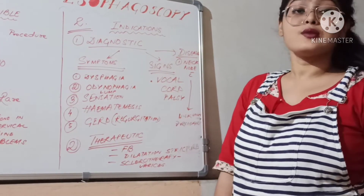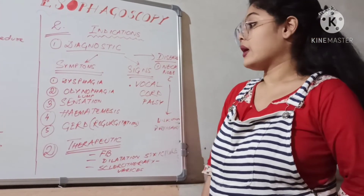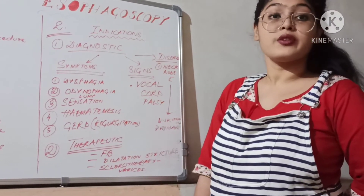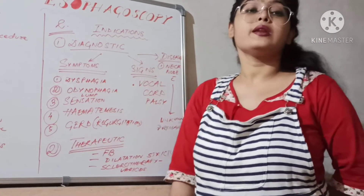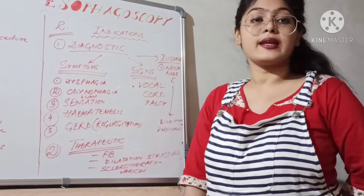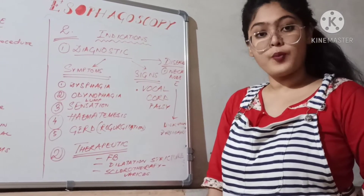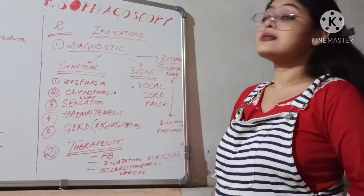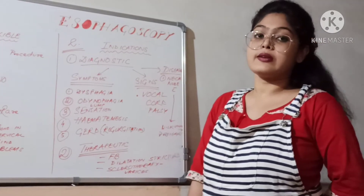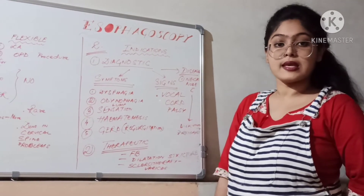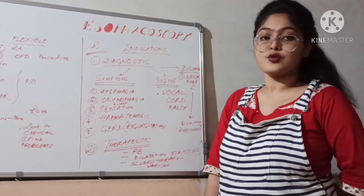Further symptoms include hematemesis, that is vomiting of blood, and gastroesophageal reflux disease. A patient presenting with regurgitation may be suspected of GERD, and hence esophagoscopy is indicated. Under signs, if a patient presents with vocal cord palsy, esophagoscopy should be performed.